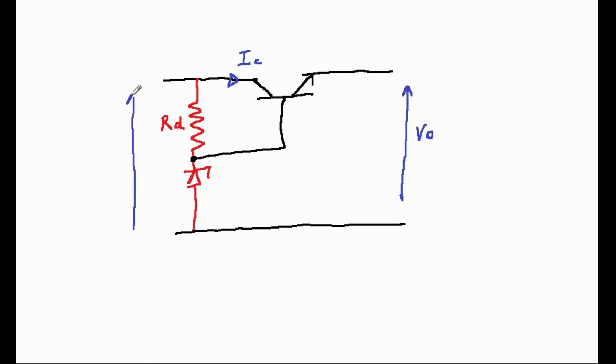Because VBE of a transistor is approximately 0.7 volts, then the voltage output is the zener voltage plus 0.7, and so this basically fixes V out.